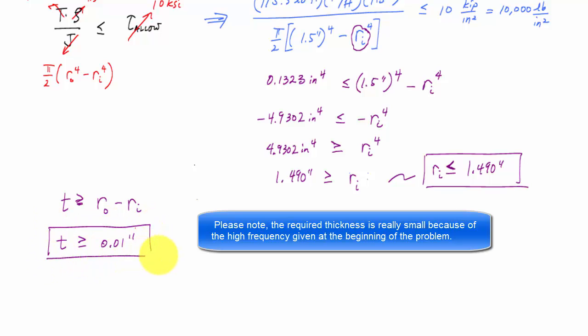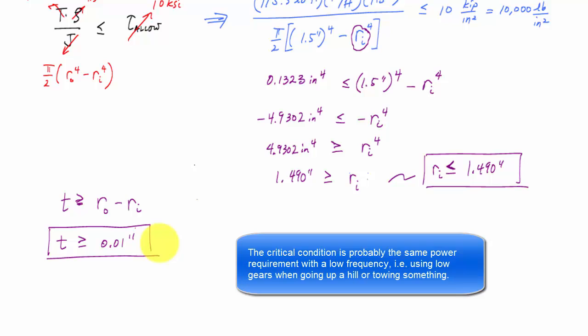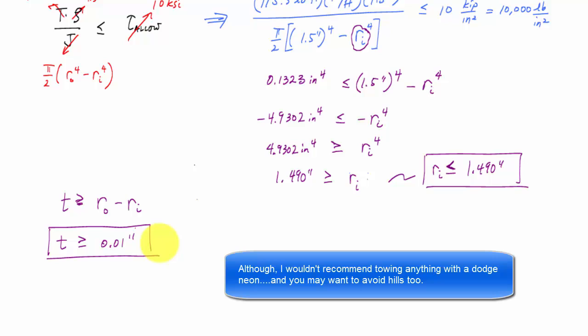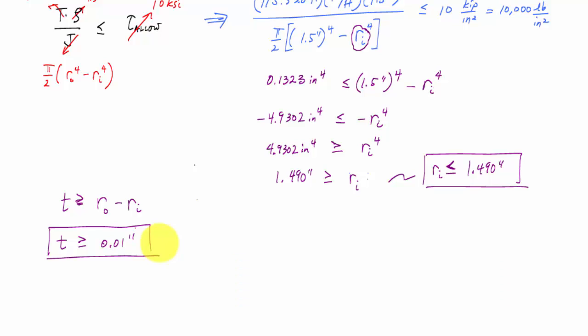So this is going to be our design requirement that we choose a hollow circular shaft that has at least 0.01 inch wall thickness. So as long as you meet this requirement, you should be able to deliver the 132 horsepower at 6,000 RPMs. All right, hopefully that was a useful example problem. Take it easy. See ya.